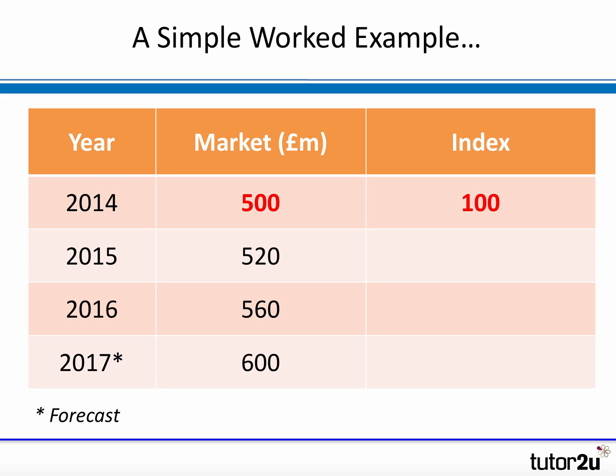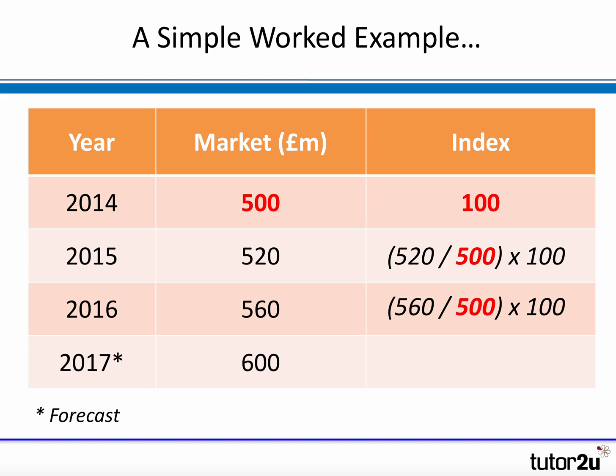How does the index change as the market changes in value? We see that in 2015, 2016, and forecast for 2017, the market value increases each year, so we would expect the index to increase to reflect the percentage change. The calculation is straightforward: in 2015, it's 520 divided by the base of 500 times 100. In 2016, it's 560 divided by 500 times 100. And for 2017, it's 600 divided by 500 times 100. An index number is always calculated by reference to the base. Pause the video to have a go at calculating these.